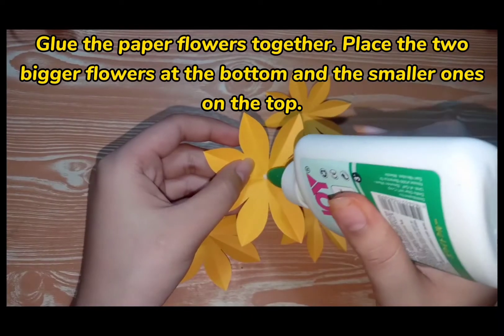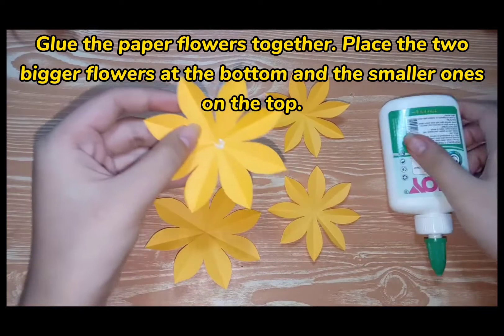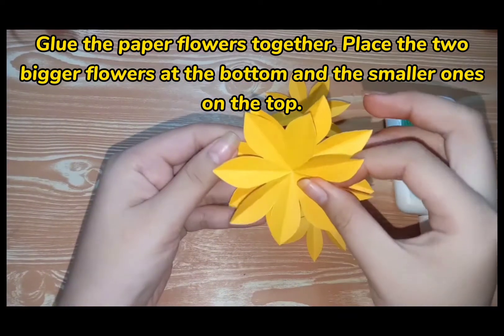Glue the paper flowers together. Place the 2 bigger flowers at the bottom and the smaller ones on the top.